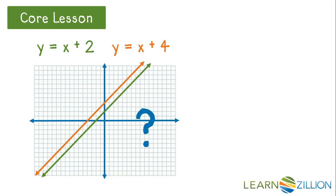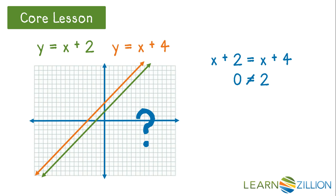What does that mean for the system of equations? Is there another way to write the system? We can set the expressions x plus 2 and x plus 4 equal to each other, since both expressions are equal to y. This says the sum of a number and 2 is equal to the sum of a number and 4. When we solve this equation, we see that 0 does not equal 2. If we add 2 to a number, we will never get the same answer as if we add 4 to that same number.